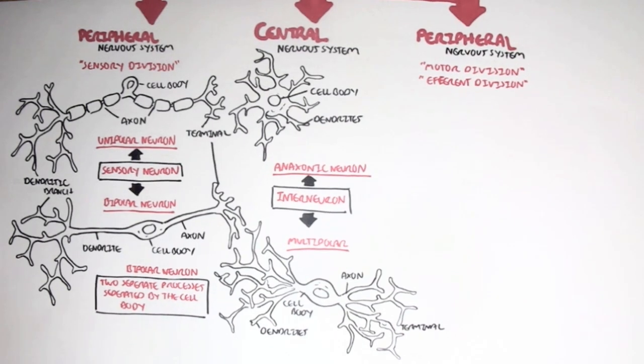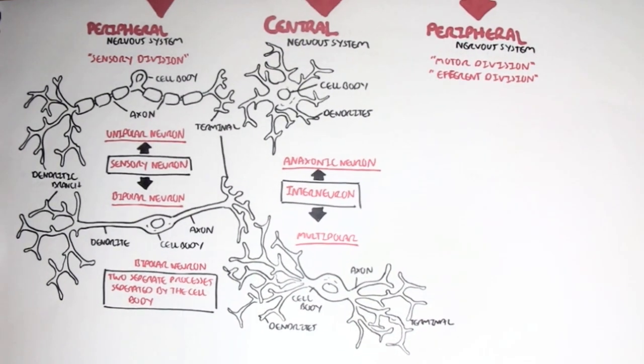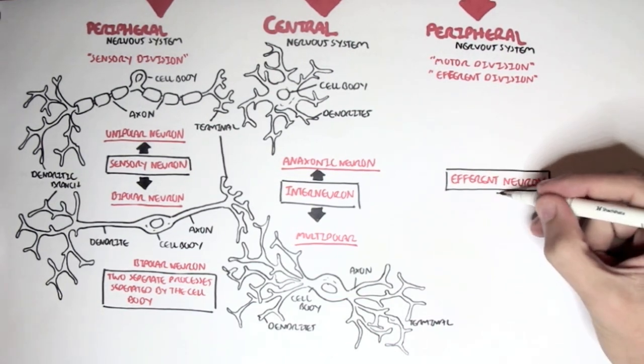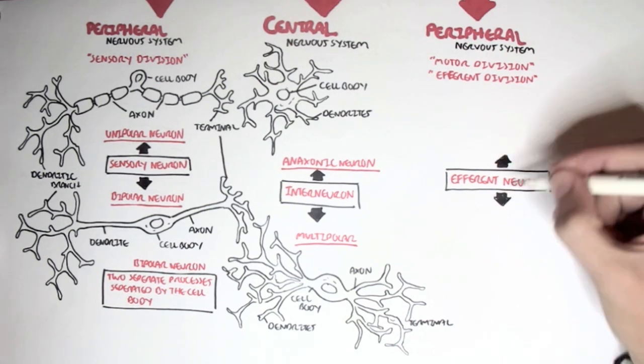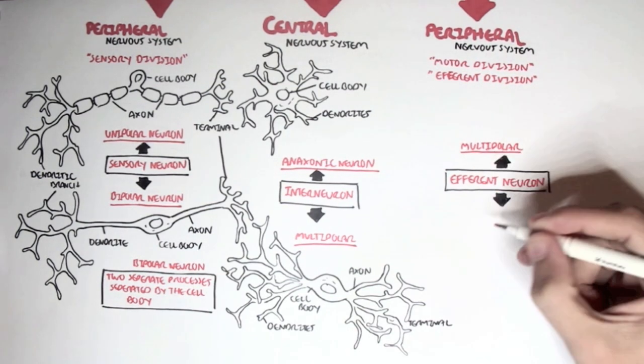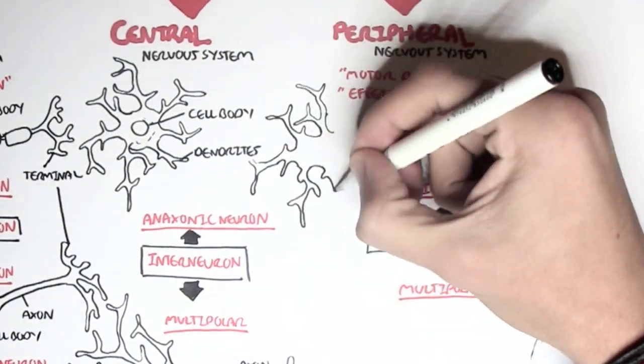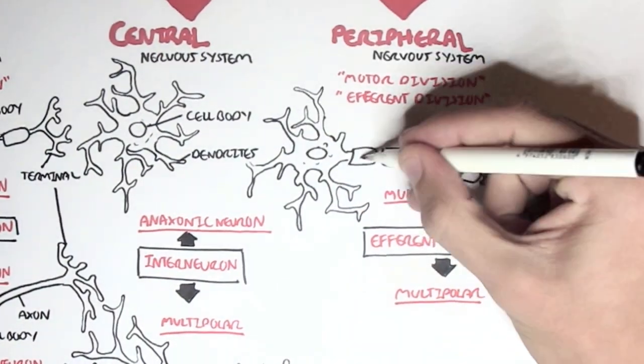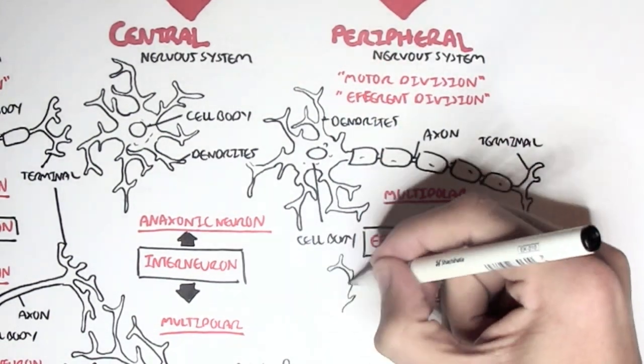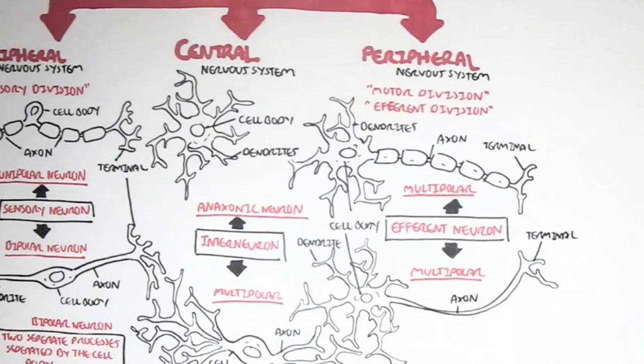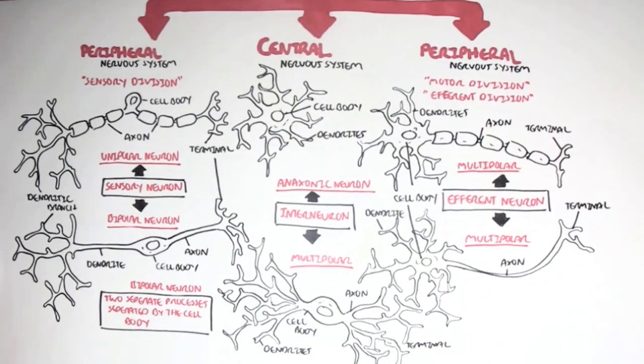Now, the efferent division of the peripheral nervous system contains efferent neurons, motor neurons, which are all multipolar in structure. And this is the type of neuron I drew in the beginning of this video. We can have efferent neurons with myelin wrapping around it, or we can have efferent neurons without myelin wrapping around it. Either way, both are multipolar in structure.